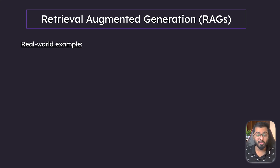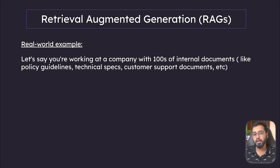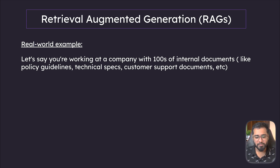So this is the first problem that RAGs solve. Let's explore a very simple example. Let's say you work at a company with hundreds of internal documents — things like policy guidelines, technical specs, customer support documents. These are private documents that the LLM does not know about.